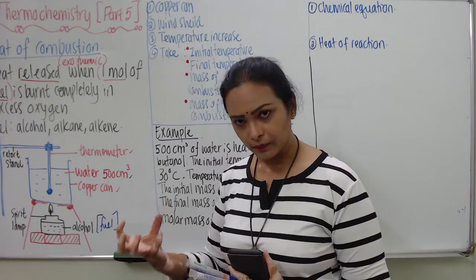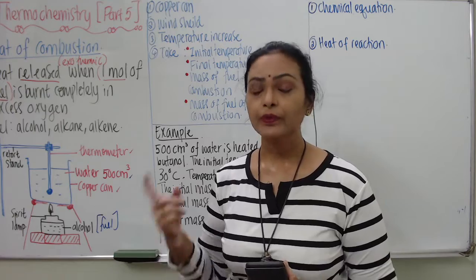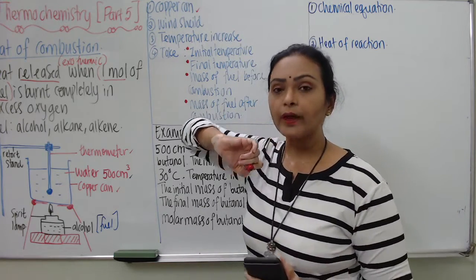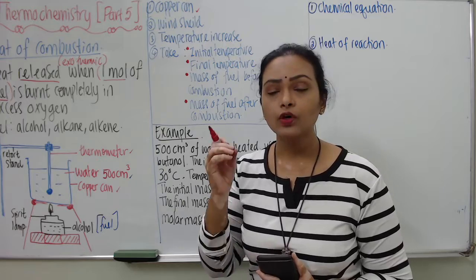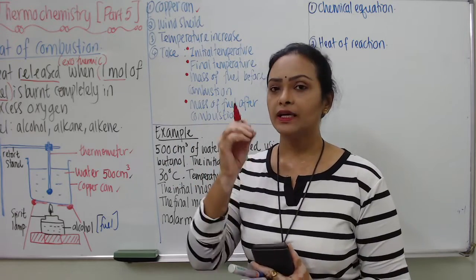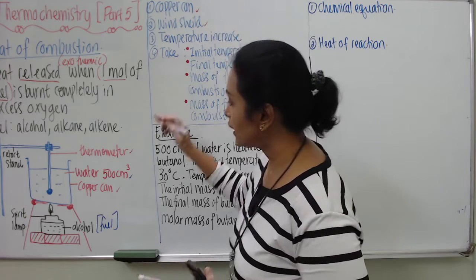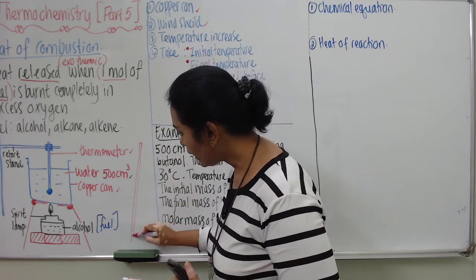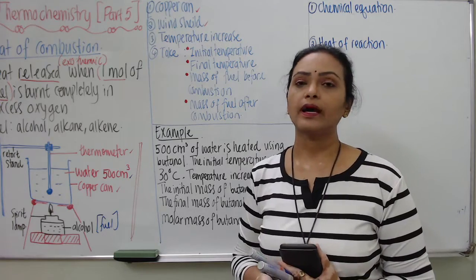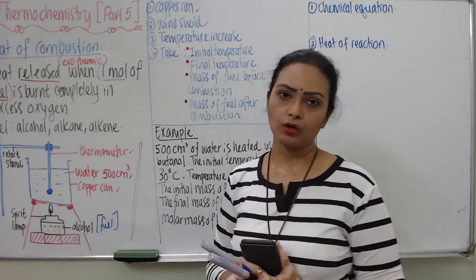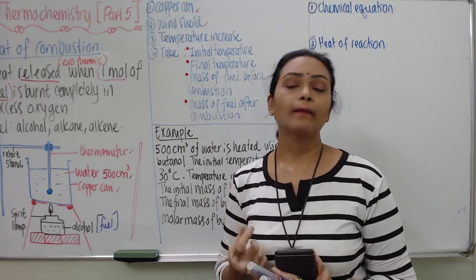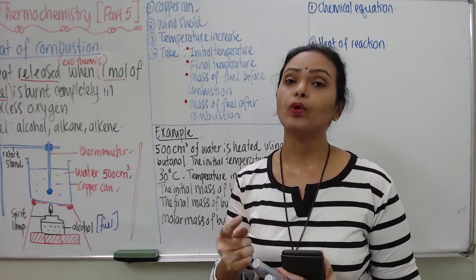The spirit lamp is where we store the alcohol fuel. You can also draw a windshield at the side of the apparatus setup. The windshield prevents air from disturbing the burning of the alcohol. When the burning of alcohol or fuel is disturbed by moving air, the heat of combustion that students calculate will not be accurate.